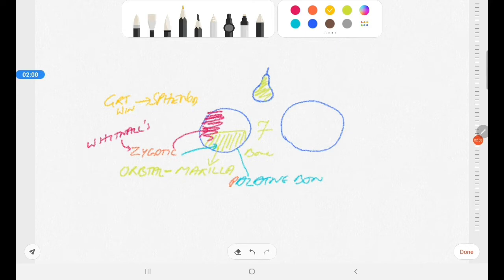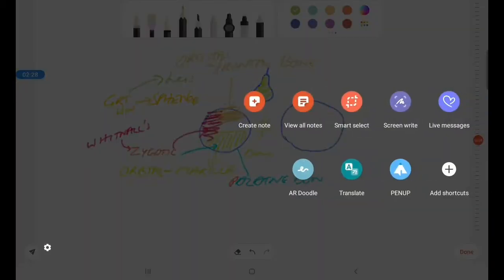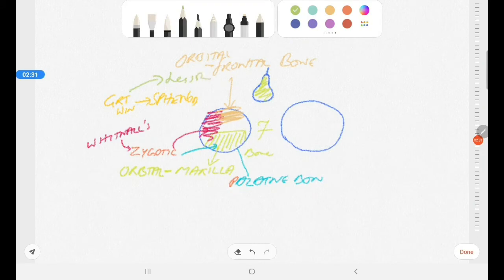Coming to the roof, it is contributed by the frontal bone. It is called as the orbital plate. Along with that there is contribution also from the lesser wing of sphenoid bone.